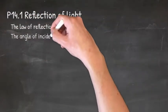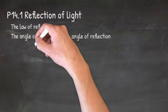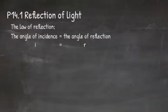In this video, we are looking at the reflection of light. The law of reflection states that the angle of incidence is equal to the angle of reflection. In other words, i equals r.